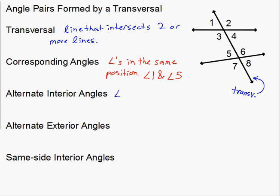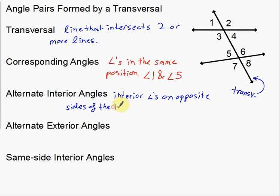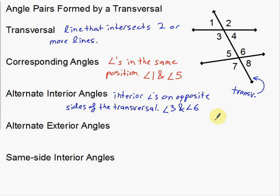These are interior angles — inside angles. The definition is: interior angles on opposite sides of the transversal. So we can only use angles three, four, five, and six since those are the only interior ones. If I start with angle three, the other one is at the other intersection on the opposite side of the transversal — that takes us all the way over to angle six. So angle three and angle six are one pair of alternate interior angles.